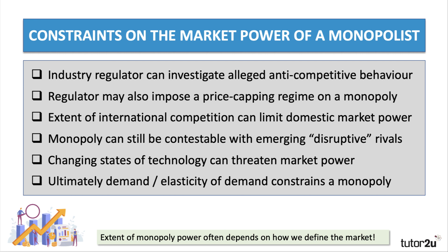In financial technology, new entrants are disrupting the power of the commercial banks and other lenders. New technologies and changing states of technology can threaten market power. Ultimately, a monopolist is constrained by their demand curve — the willingness and ability of people to buy goods and services — as well as the elasticity of demand, the responsiveness of demand to a change in price. The extent of monopoly power often does depend on how we define the market.